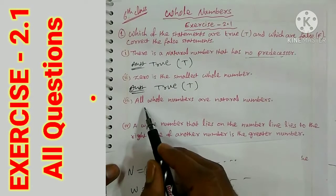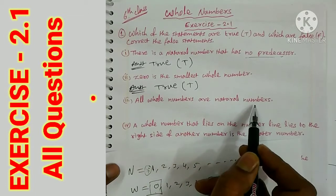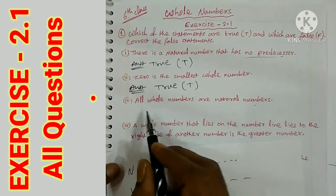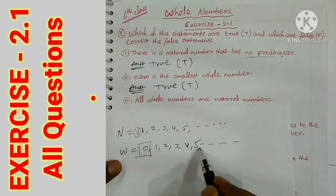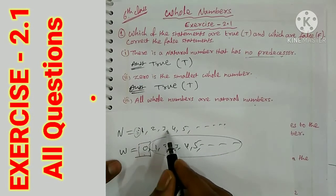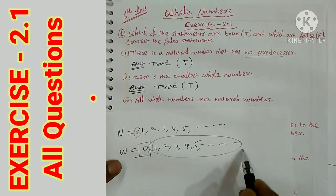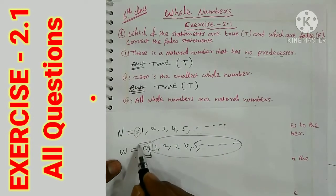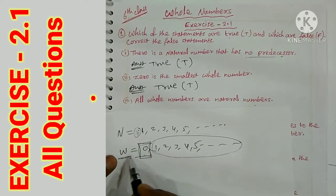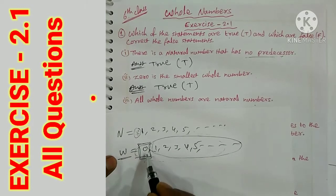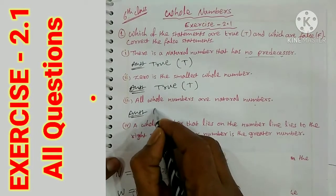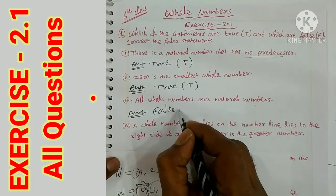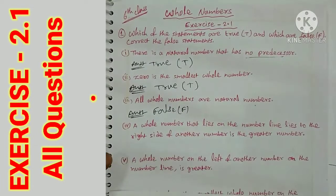Third bit: all whole numbers are natural numbers. Natural numbers are 1, 2, 3, 4, 5 — 0 is not a natural number. Since 0 is a whole number but not a natural number, not all whole numbers are natural numbers. So this statement is false.